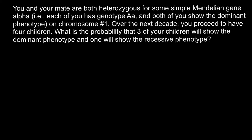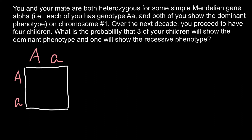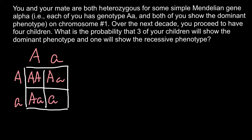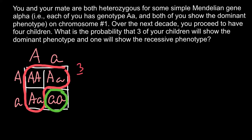We are told that both parents are heterozygous, so the genotype of each parent would be capital A and small a. In order to find the probability for their children to be dominant phenotype or recessive phenotype, we have to build a Punnett square. So we have capital A capital A, capital A small a, capital A small a, and small a small a. According to the Punnett square, probability for the child to be phenotypically dominant would be 3 out of 4.